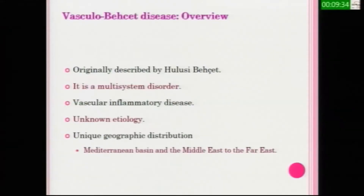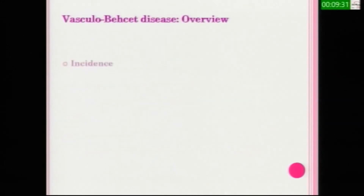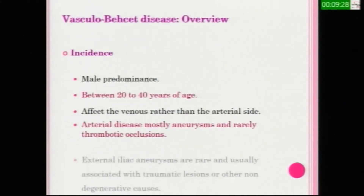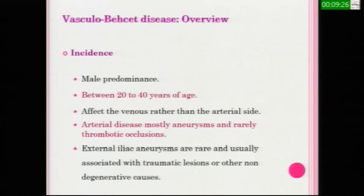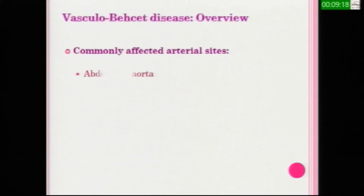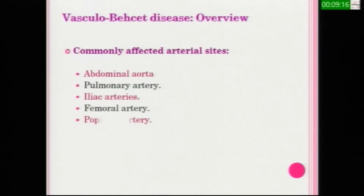Behçet's Disease is a multisystem vascular inflammatory disorder of unknown etiology with male predominance between 20 to 40 years of age. It affects venous rather than arterial sites. Arterial disease is mostly aneurysm and rarely thrombotic occlusion. The commonly affected arteries are abdominal aorta, pulmonary artery, iliac arteries, femoral, popliteal, and carotid arteries.